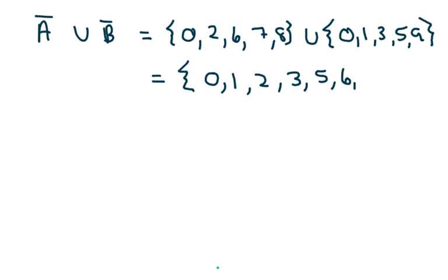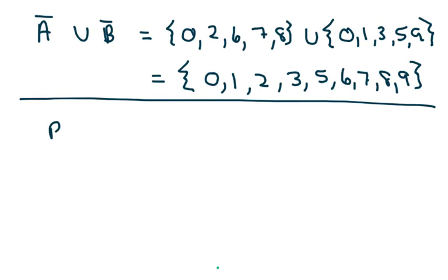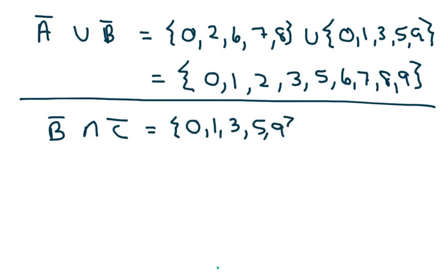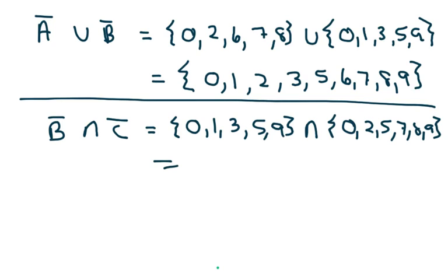Now let's try the complement of B intersect with the complement of C. I write down what's not in B, and it intersects with what's not in C, which is {0, 2, 5, 7, 8, 9}. The intersection is what's common to both, which is 0, 5, and 9. So the answer is {0, 5, 9}.